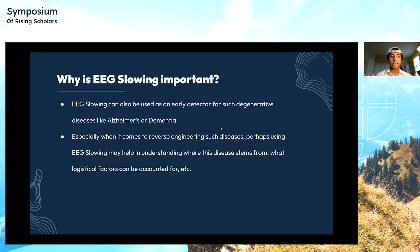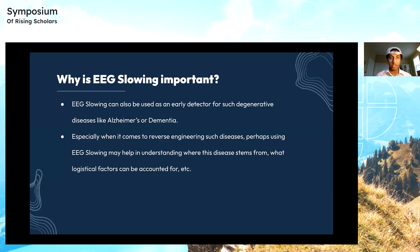Why is EEG slowing important? EEG slowing can be found as an early detector for degenerative diseases like Alzheimer's or dementia, especially when it comes to reverse engineering such diseases. Perhaps using EEG slowing may help in understanding where the disease stems from and what logistical factors can be accounted for. EEG slowing contains a lot of information not only in the temporal areas but also the spatial areas.